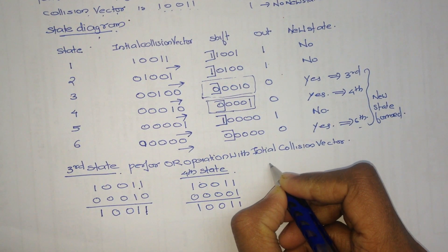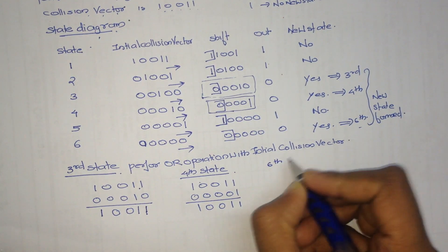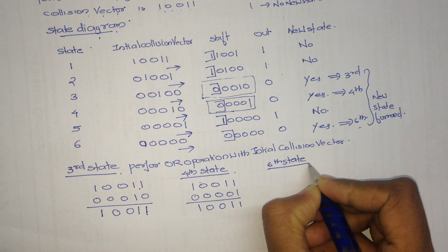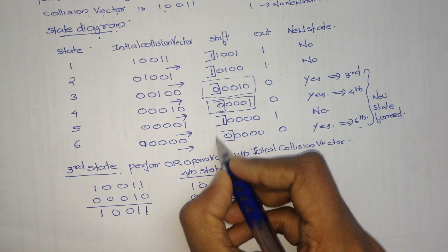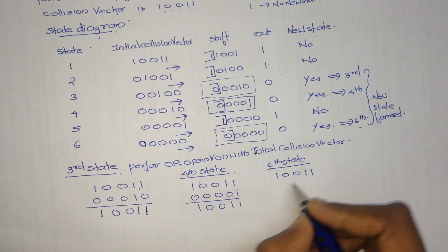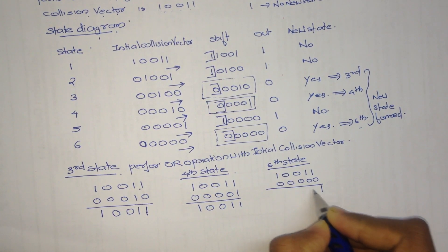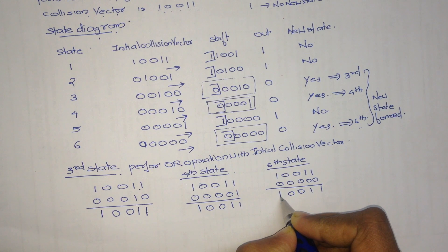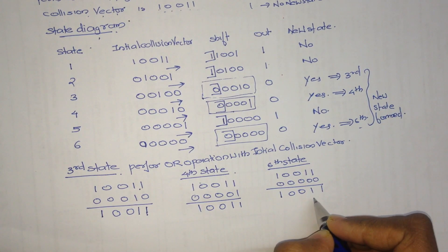During the sixth new state, we perform OR of the initial collision vector with 0, 0, 0, 0, 0. The result is 1, 1, 0, 0, 1. Again we got the initial collision vector.